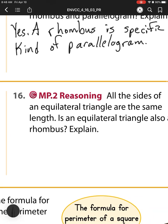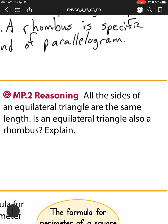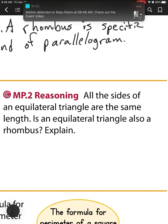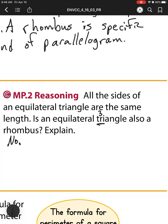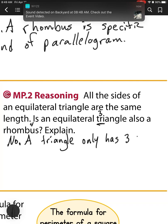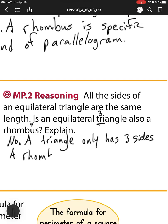Number 16: All sides of an equilateral triangle are the same length. Is an equilateral triangle also a rhombus? The answer is no. The prefix 'tri' means three, and a rhombus has four sides. So: a triangle only has three sides, while a rhombus has to have four sides.